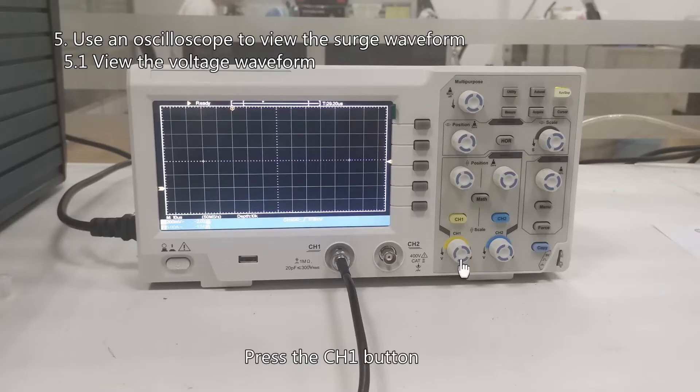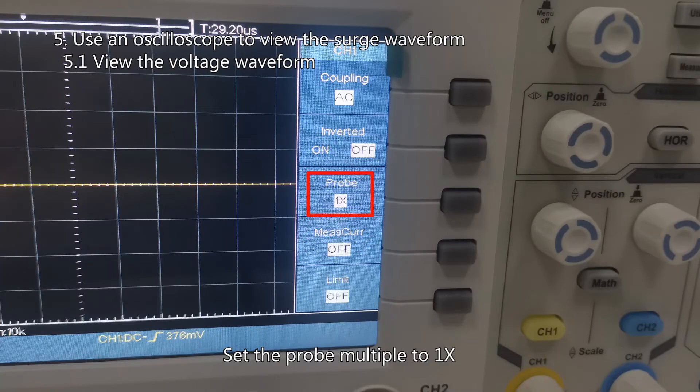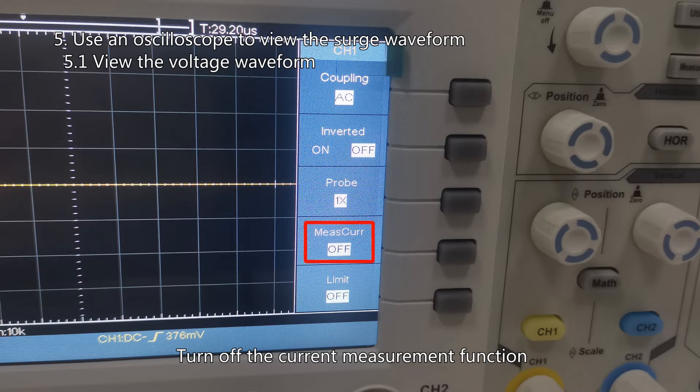Press the CH1 button. Set the probe multiple to 1x. Turn off the current measurement function.